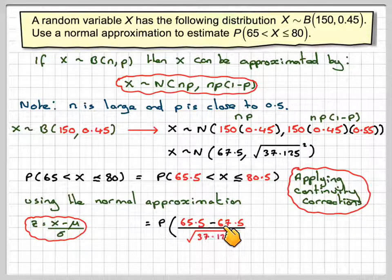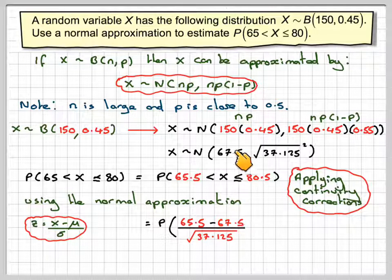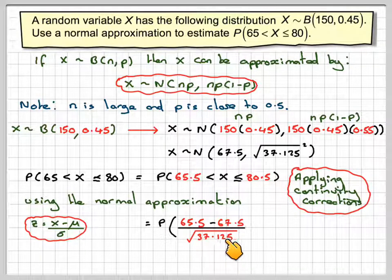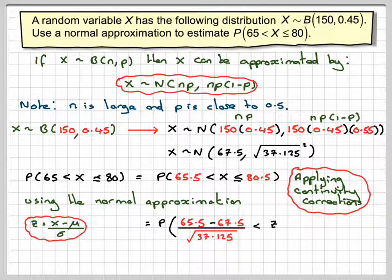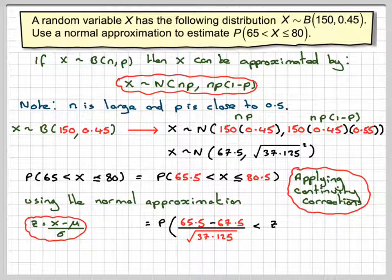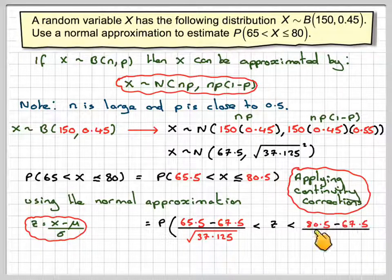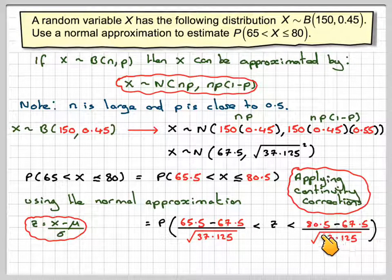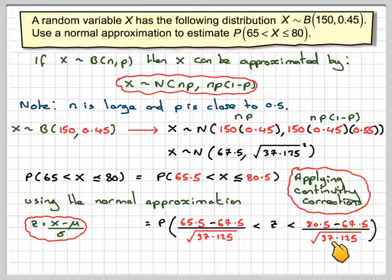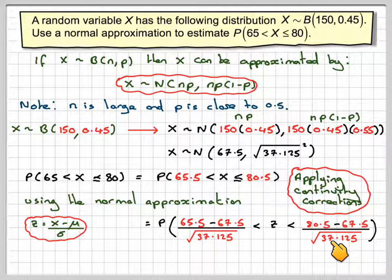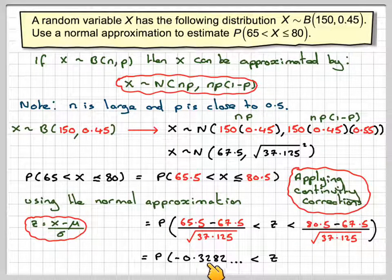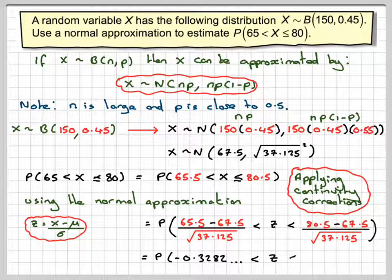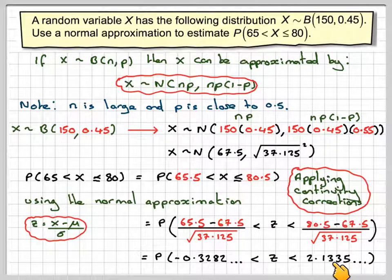So it's going to be (65.5 minus 67.5) over the square root of 37.125, less than z less than (80.5 minus 67.5) divided by the square root of 37.125. When we work those out on a calculator, we get the probability that z is between minus 0.3282 and 2.1335.